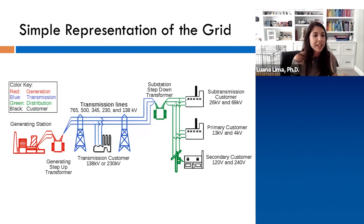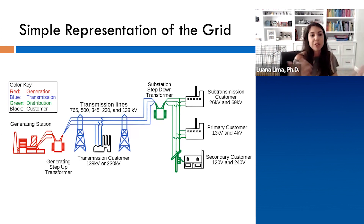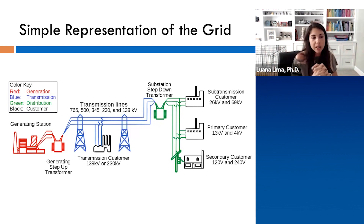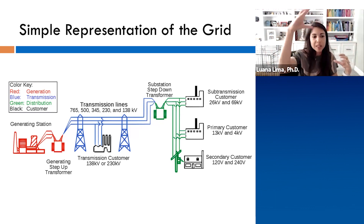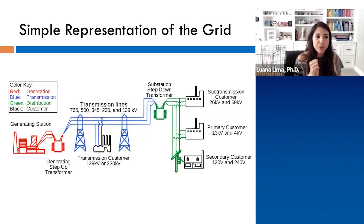This is essentially a radial grid representation: generation on one side, transmission in the middle, and consumers connected on the distribution grid. Nowadays we also have distributed energy resources — distributed generators, storage, and other agents — on the distribution side as well. We use step-up transformers because at high voltages we have less losses during transportation, then we step down and deliver the power to consumers.